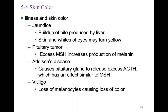Illness and skin color: jaundice is a buildup of bile produced by the liver, causing the skin and whites of the eyes to turn yellowish — especially seen in liver failure. A pituitary tumor can produce excess MSH, leading to increased melanin production. Addison's disease causes the pituitary gland to secrete excess adrenocorticotropic hormone (ACTH), which also increases MSH. Vitiligo is loss of melanocytes, causing loss of pigmentation.